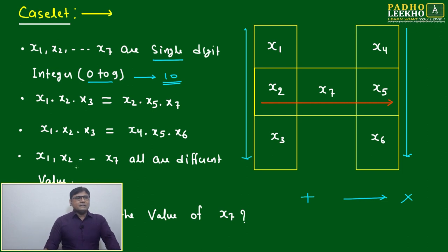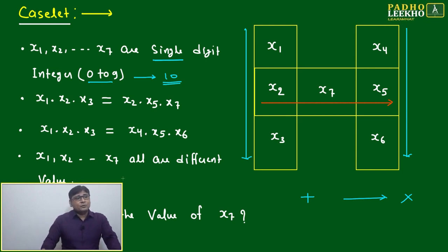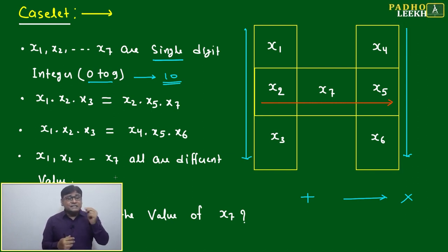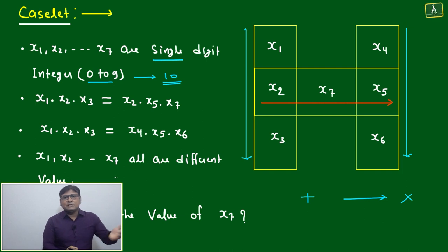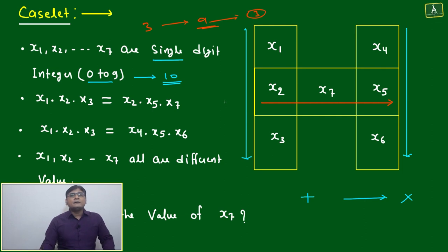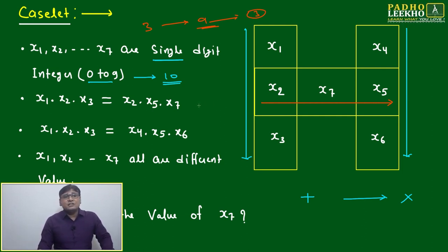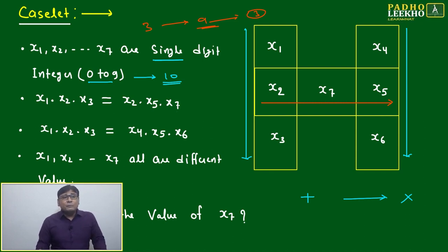If the condition that all values are different is not given, many more options open up. All prime and odd numbers would need consideration. For single-digit numbers, 5 and 7 cannot be factorized further — so if 5 or 7 appears in one product, it must appear in the other too. For the number 3, we have options like 1 and 9. But for 5 or 7, no single-digit alternative exists.